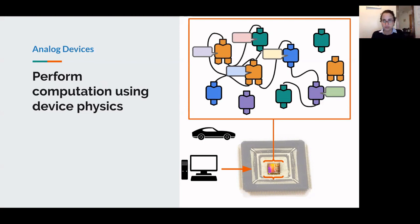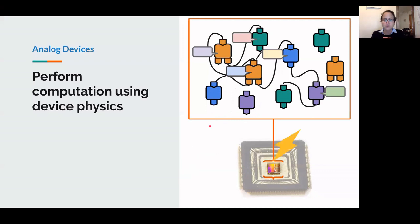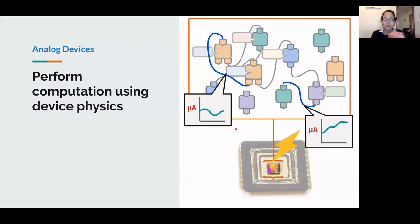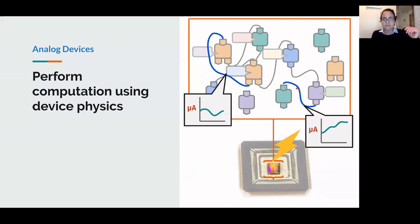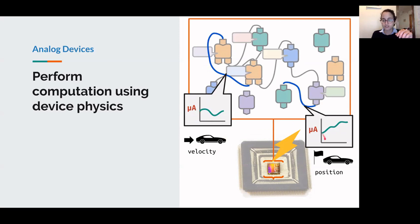Once you've configured the analog device to implement the dynamical system — say, configured so the circuit dynamics model the physics of a car — you power on the device and observe the trajectory of the analog currents moving through the wires over time. For example, the currents moving through two highlighted wires might correspond to characteristics of your dynamical system: one current could correspond to the velocity of the car and another to the position of the car.